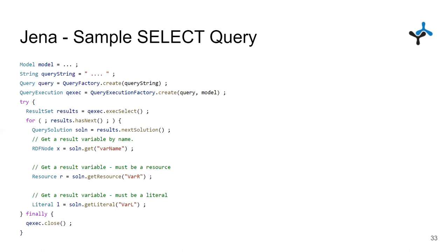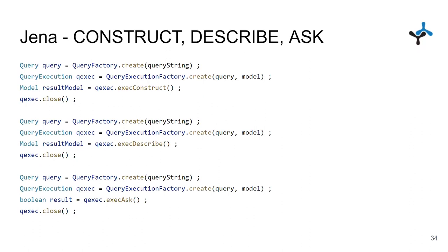For CONSTRUCT, DESCRIBE, and ASK queries the process is similar: we create the query and QueryExecution the same way. The only difference is which execution method we call — execConstruct() returns a Model since those are RDF triples, execDescribe() also returns a Model, and execAsk() returns a boolean result.